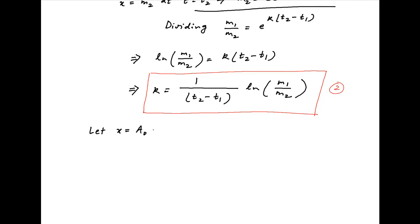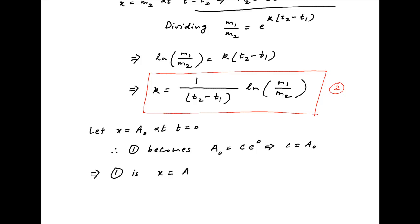Now let's assume that the amount of uranium originally present is equal to a0, so x is equal to a0 at t equal to 0. Putting this in equation 1, we get a0 is equal to c times e raised to the power 0, which implies that c is equal to a0. Therefore equation 1 becomes x is equal to a0 times e raised to the power minus kt.